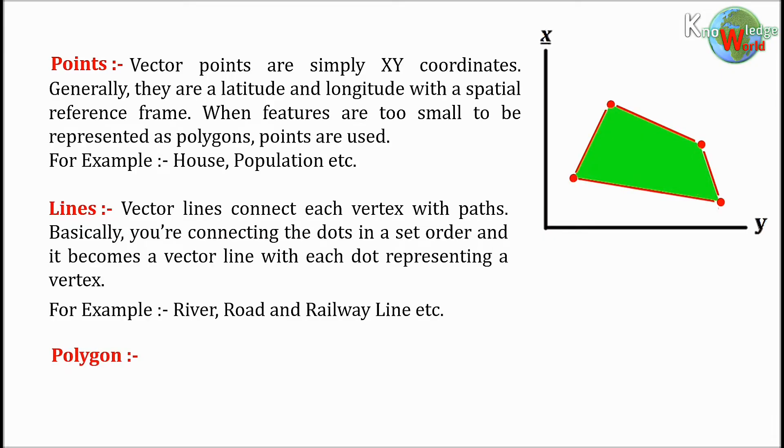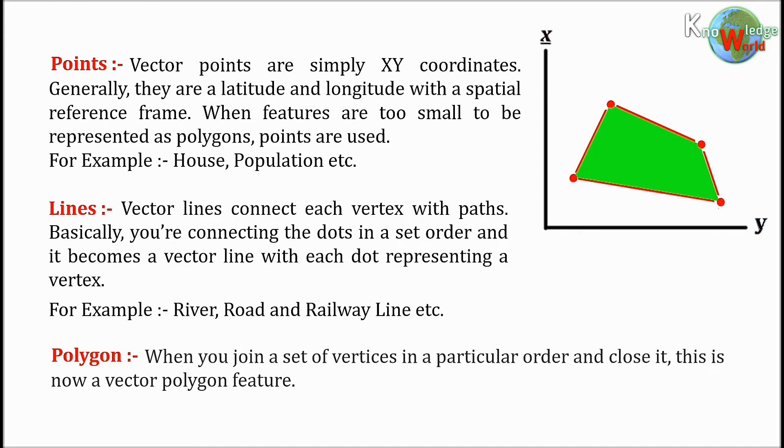Polygon: When you join a set of vertices in a particular order and close it, this is now a vector polygon feature. In order to create a polygon, the first and last coordinate pair are the same. Cartographers use polygons to show boundaries, and they all have an area.